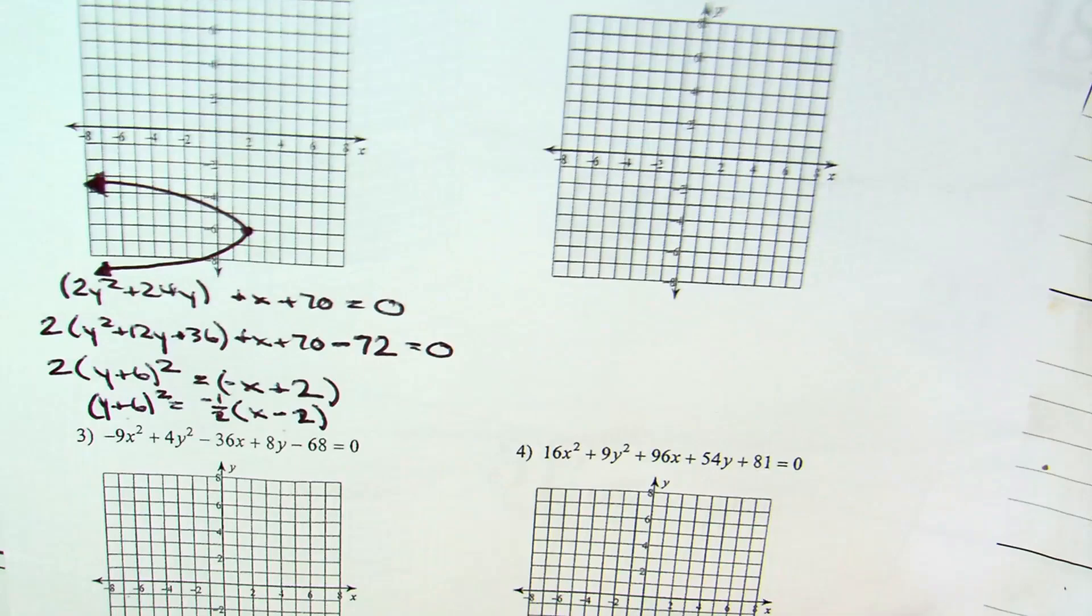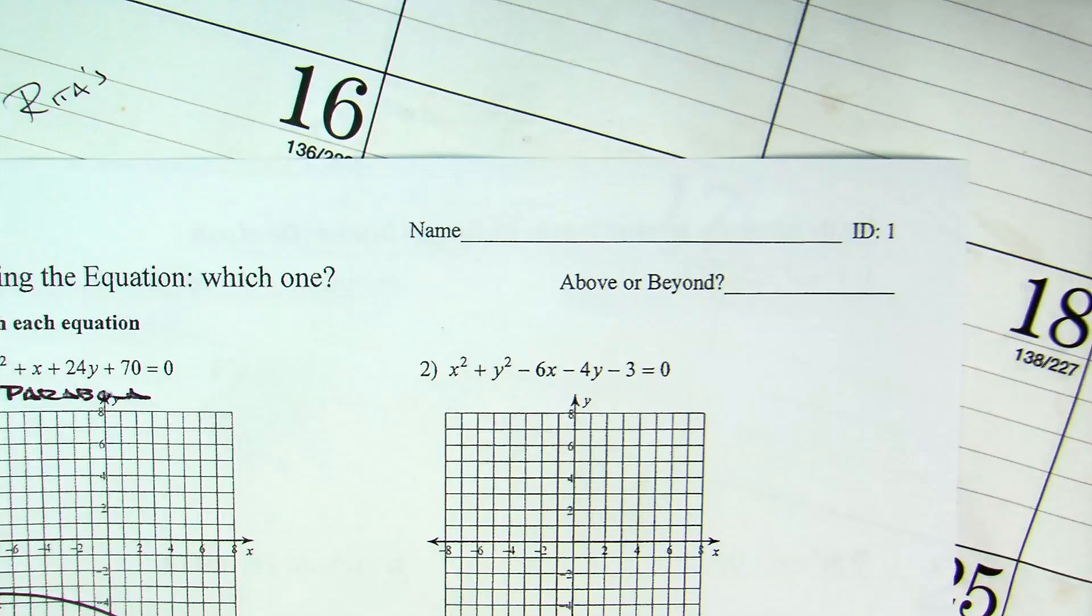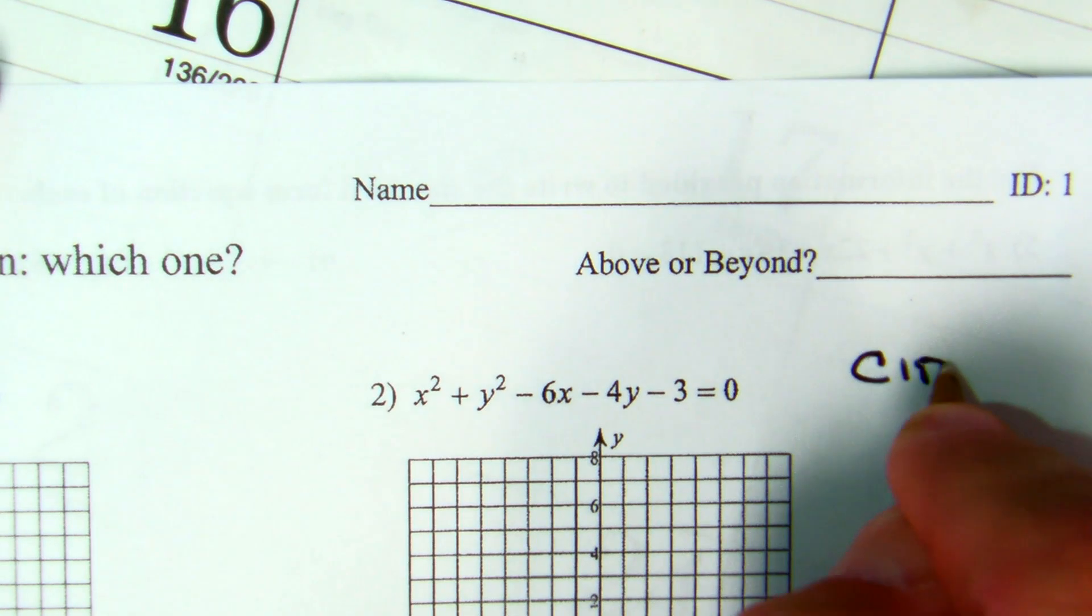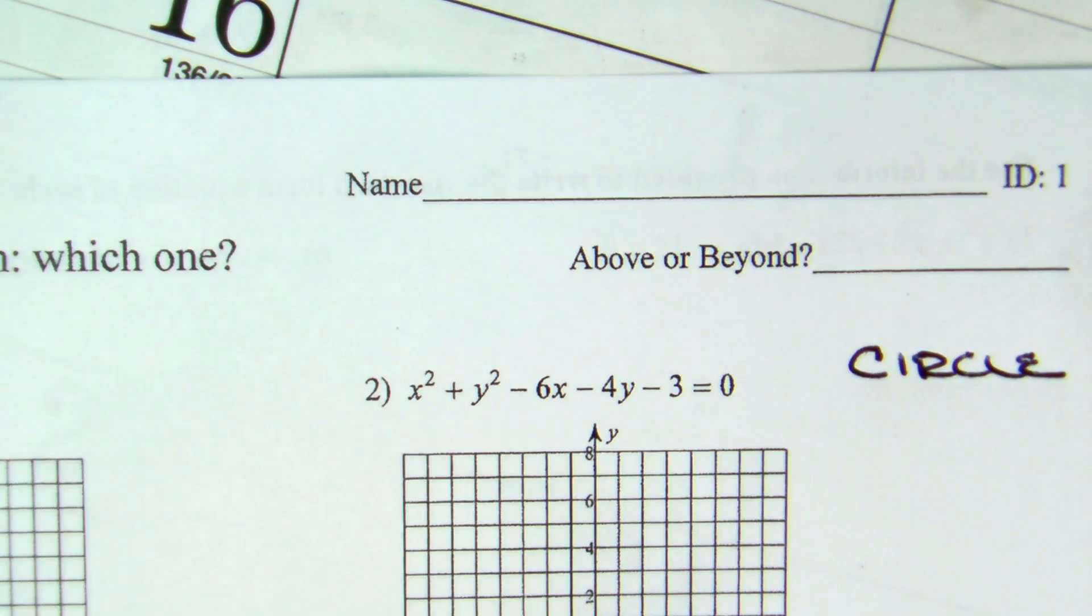Number 2. Are they both squared? Yes. Do they have the same coefficient? Yes. Ladies and gentlemen, that is our friendly circle.